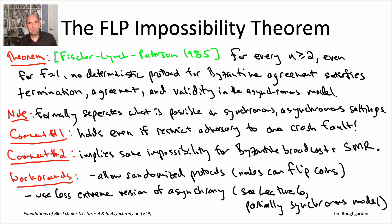So that's the statement of the FLP impossibility result, along with a couple of extensions, and how to interpret results like this in the broader context. All that remains is to actually show that this is true, which is not a priori obvious at all. In the next video, we'll get started on the proof.